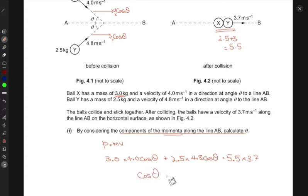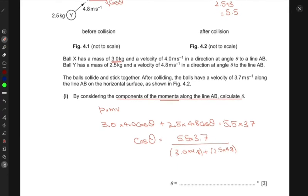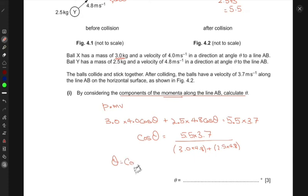From this, we can find cos theta, which equals 5.5 times 3.7 divided by 3.0 times 4.8 plus 2.5 times 4.8. And theta is just cos inverse of whatever you get from this, which is 32 degrees.